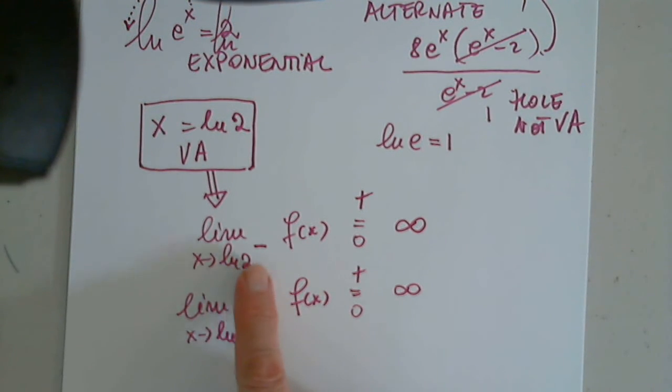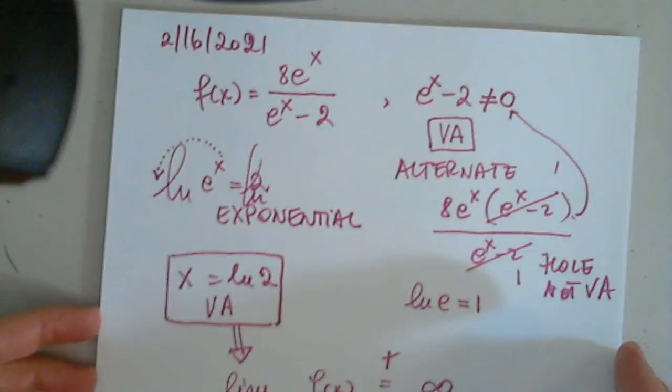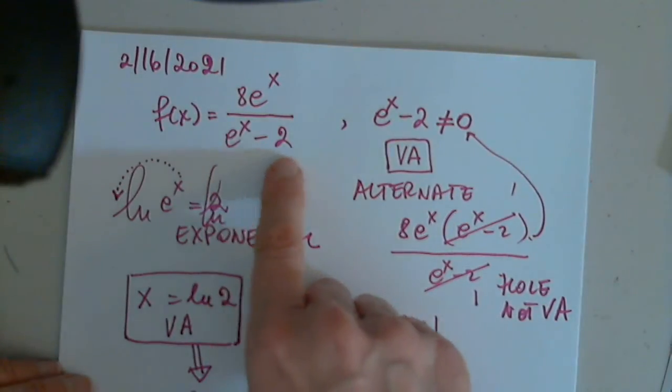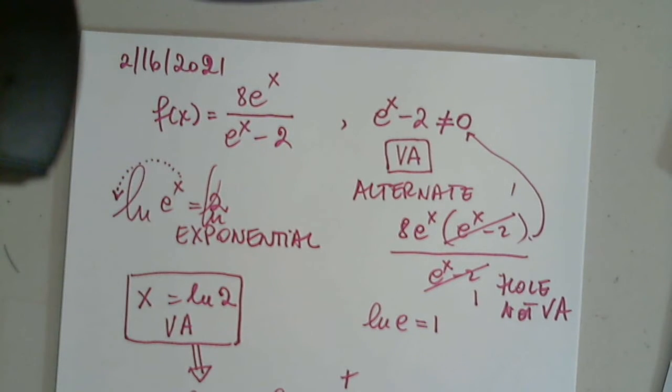So we know that these will be infinities, but we don't know the sign. So natural log 2 from the left, one option would be, it would be even easier for me to explain, just plug in this function, e to the x minus 2, in the graphing calculator.